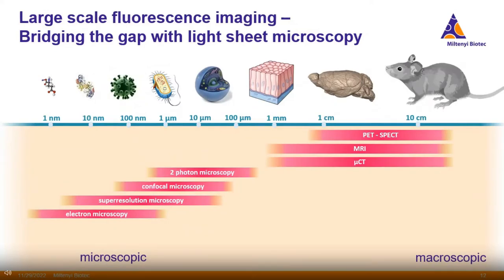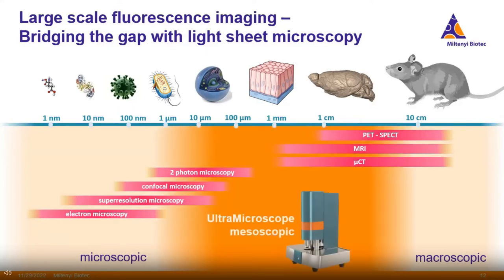Light sheet microscopy covers the gap between confocal microscopy and two-photon microscopy, which cover smaller sizes at the cell level, and MRI, which covers the whole brain directly. The UltraMicroscope sits in the middle, showing cell structures but also including whole brain anatomy, so you can track neuronal connections or see their location within the whole organ.